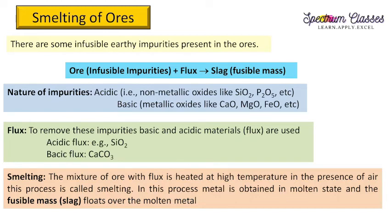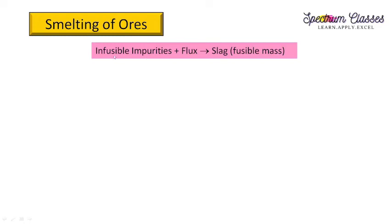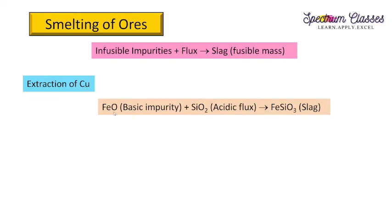In smelting: infusible impurity plus flux gives slag or fusible mass. In the extraction of copper, the impurity is iron oxide, which is basic in nature. For this basic impurity, an acidic flux is required. Silicon dioxide (SiO₂) is used as the acidic flux. It reacts to form FeSiO₃ as fusible slag, which floats over the molten copper.